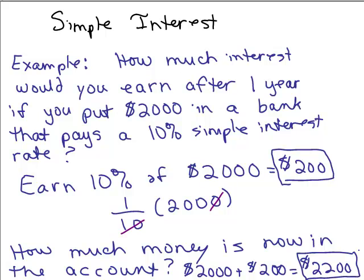Another problem might be you lent $2,000 to a friend and maybe you only charge them 4% interest. It would be done the same way — this is how much you earn at the end of a year. The reason it's called simple interest is the interest is only computed once a year basically. So if you only put the money in for half a year, you would get half as much interest — $100. If you put it in for five years, you would earn five times as much interest, which would be $1,000.